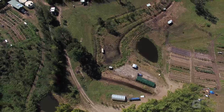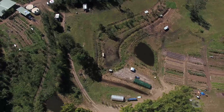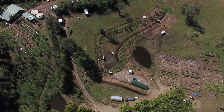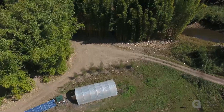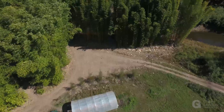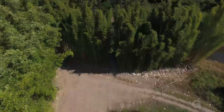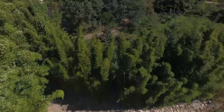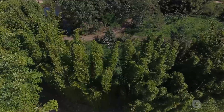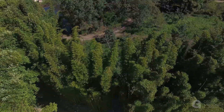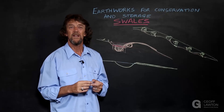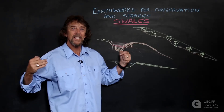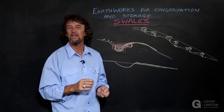Ridges should always have windbreaks because ridges are exposed to wind, but there's also more condensation on ridges. That condensation is a trickle-down moisture with nutrients, and if the swale is working downhill, we're picking that up and spreading it out.